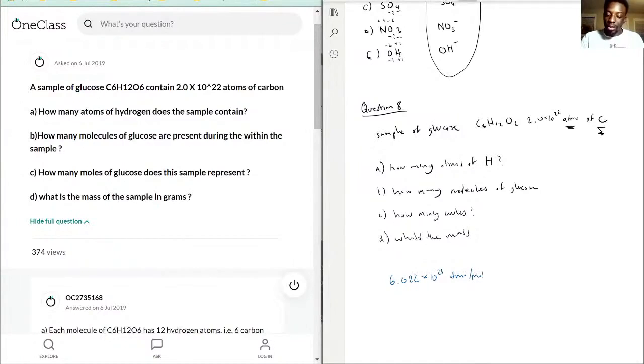Right now it's asking us how many atoms of hydrogen. In this case, we just use ratios. 6 to 12, right? That means for every one atom of carbon, there has to be two atoms of hydrogen. By using that ratio, you can answer this right off the bat—there's going to be double of that. So that's 4.0×10^22 atoms of hydrogen. That one's relatively straightforward.